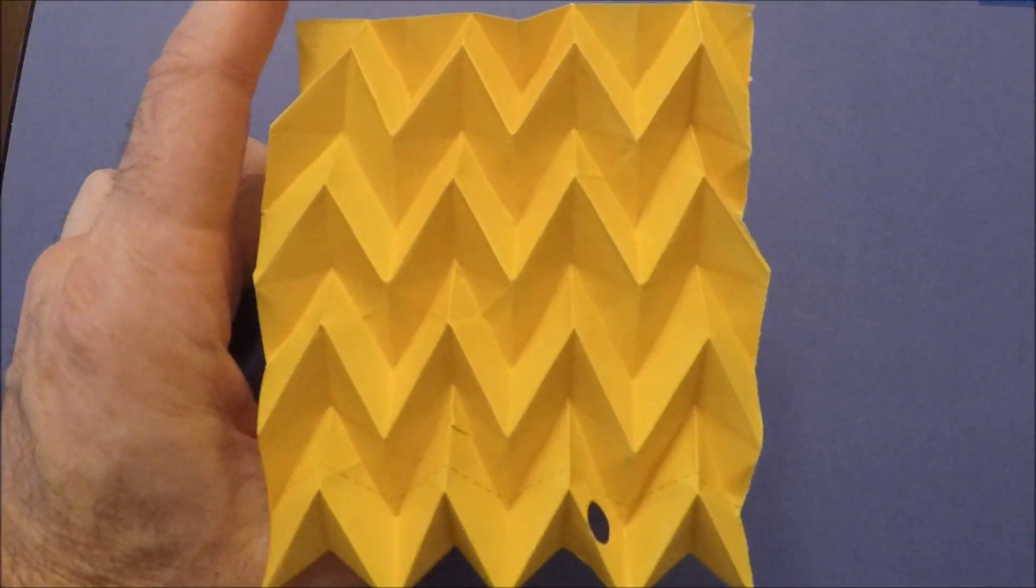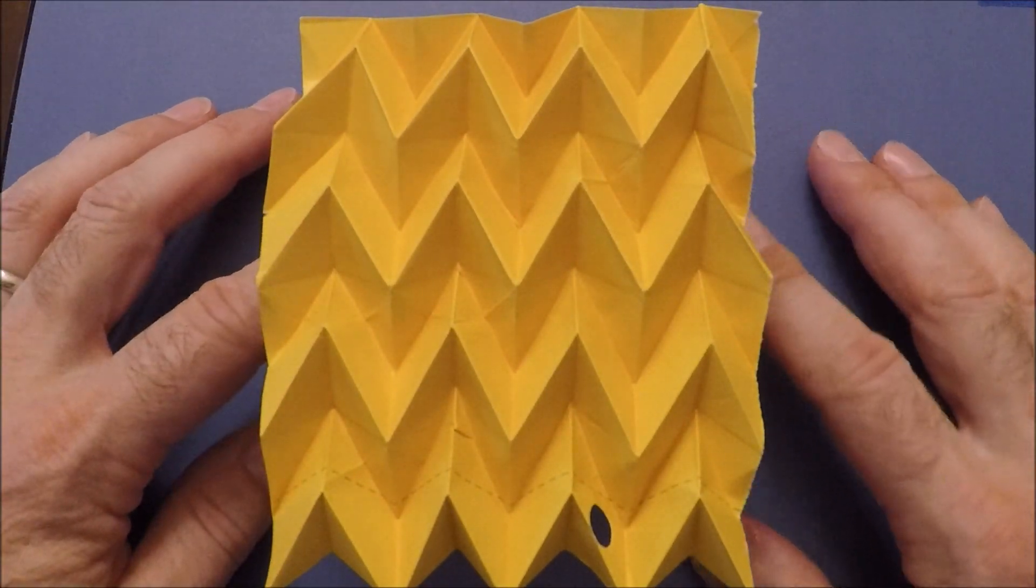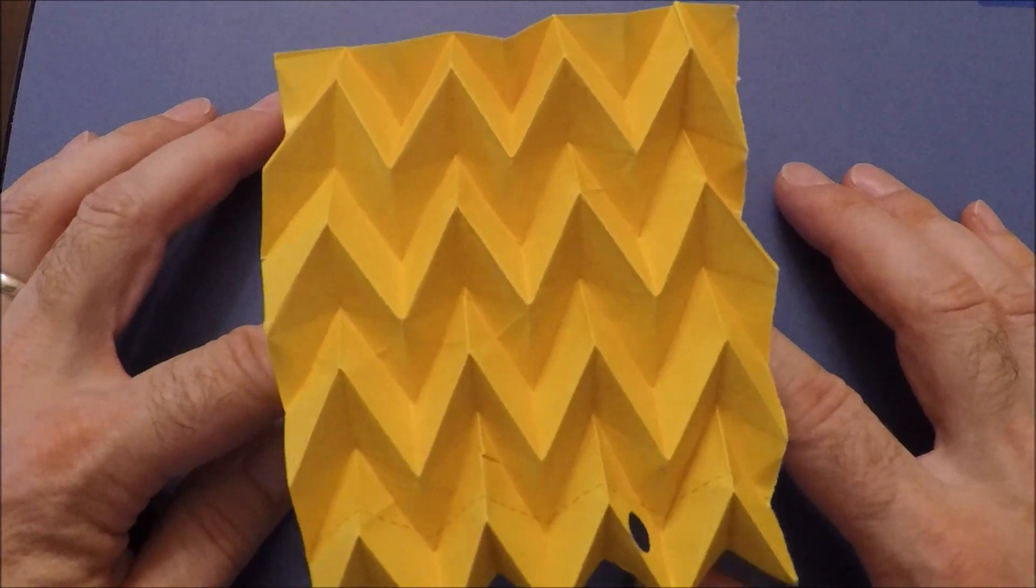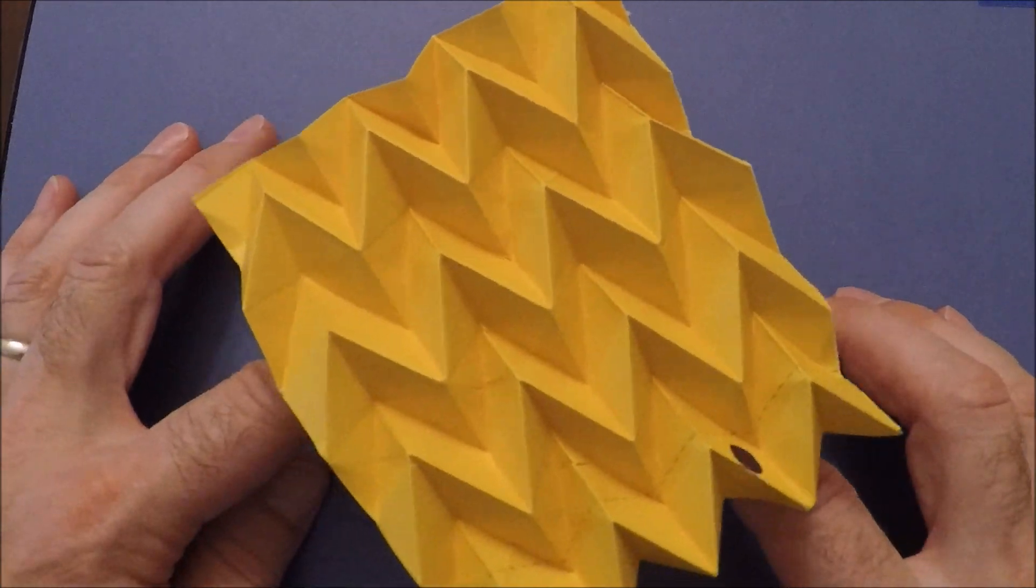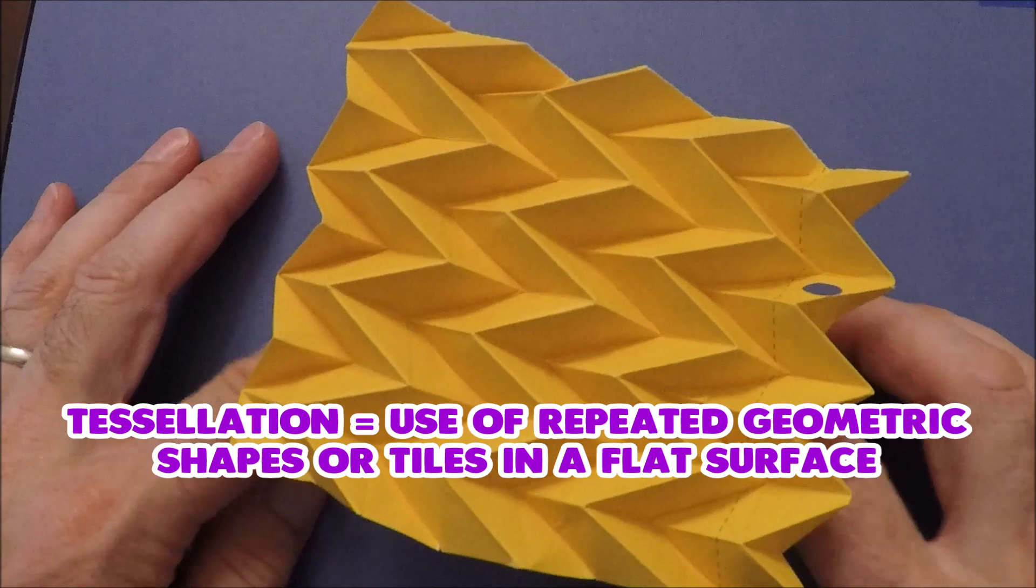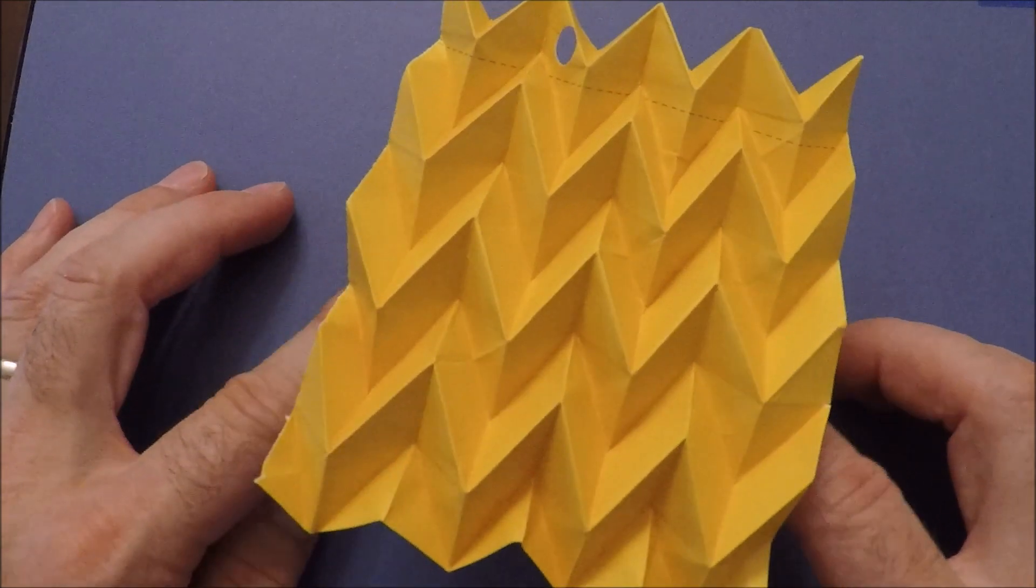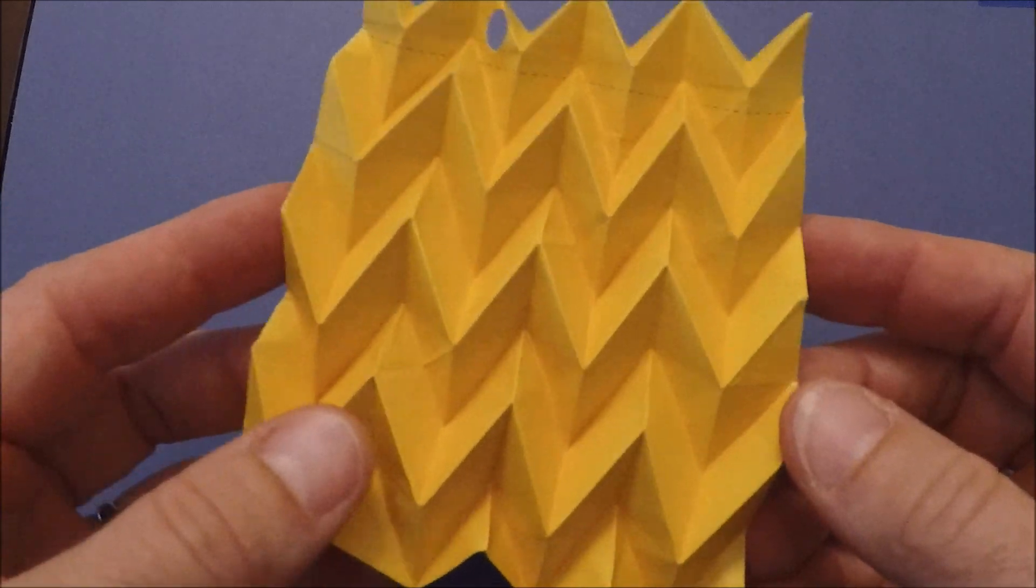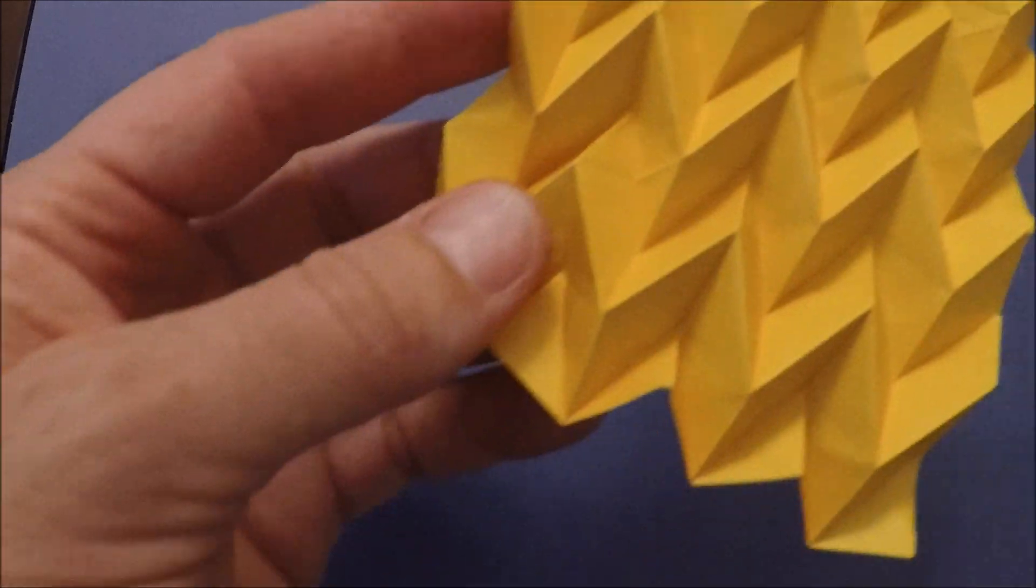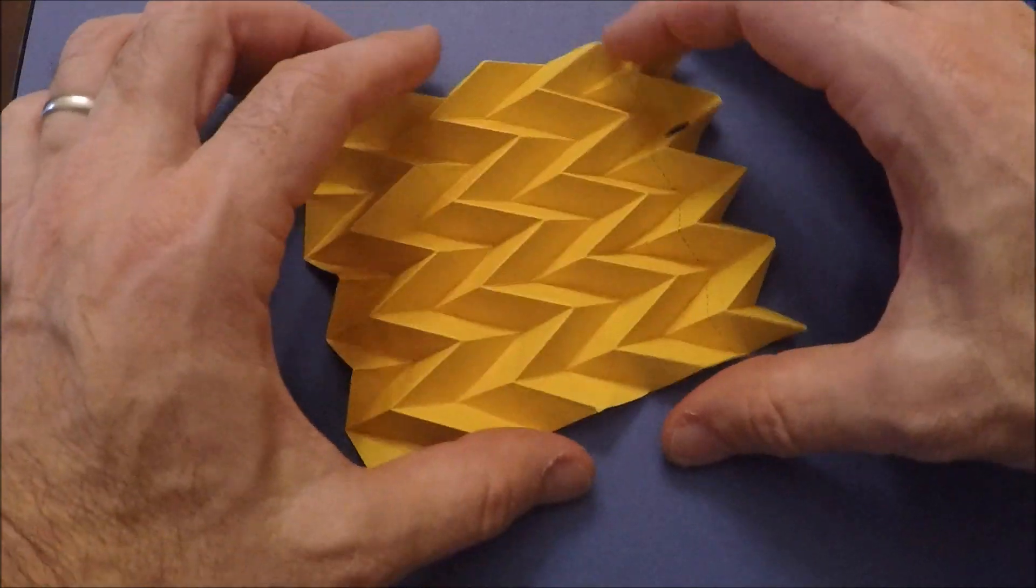Okay, what we're going to see today is the Miura ori or the Miura fold, and it's an origami tessellation. What's really unique about this is that it's actually been used in satellites for folding solar panels.